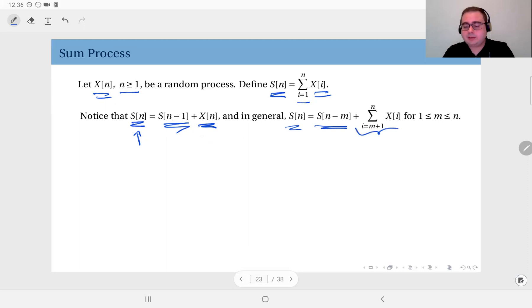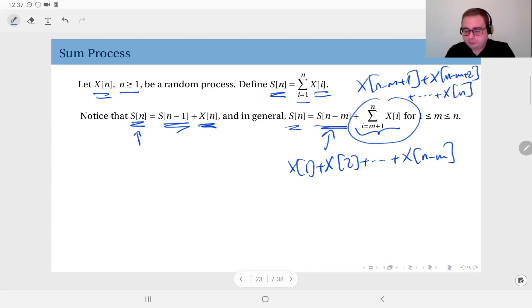Plus the remaining X terms. X of N minus M plus 1, X of N minus M plus 2, et cetera, up to X of N. So because the others are X of 1, X of 2, et cetera, up to X of N minus M are included in this sum. But the remainder is here, X of N minus M plus 1, plus X of N minus M plus 2, up to X of N. Some terms are here, the remainder are here. We will use this idea a lot when computing autocorrelations in the sequel.